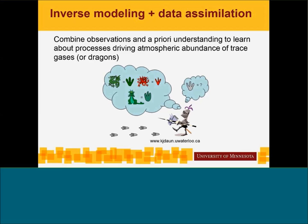The tools I use to do my work are inverse modeling and data assimilation. When I learned about inverse modeling, I learned about the example of a knight who is searching for the dragon he's about to slay. He's seeing footprints on the ground, and based on what he knows about dragons and footprints — maybe it rained or they're smeared in mud — he has to deduce which dragon he's tracking. Similarly, in our work, we use observations and our a priori understanding about the atmosphere and emission processes to deduce what is driving the atmospheric abundance of trace gases.